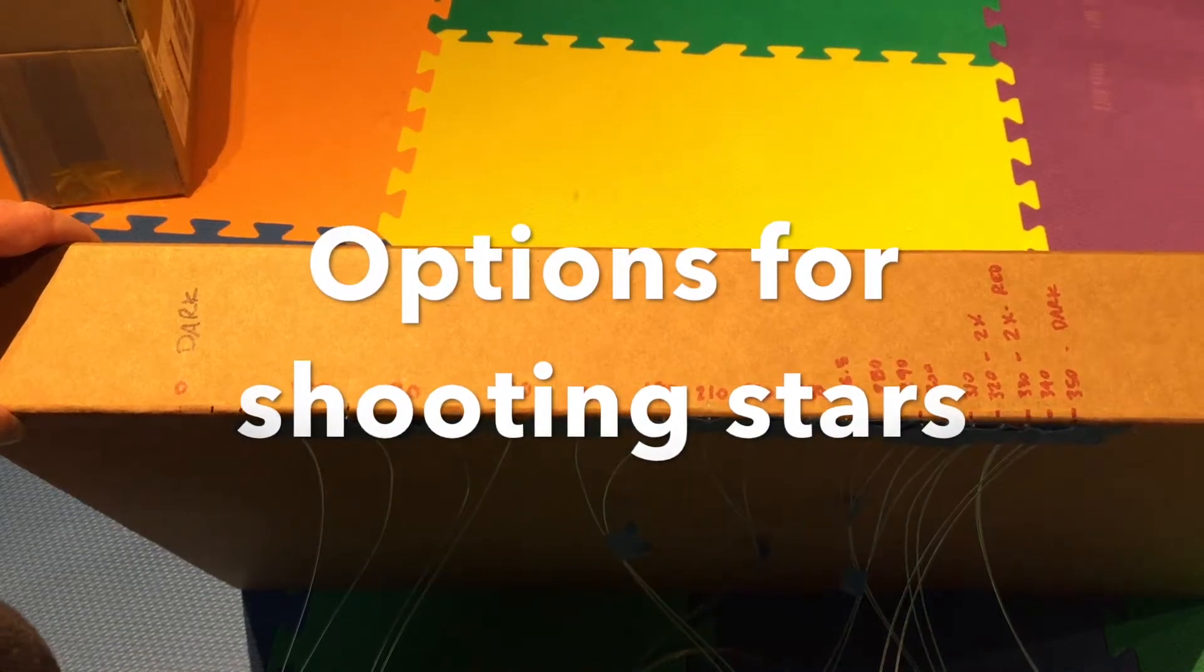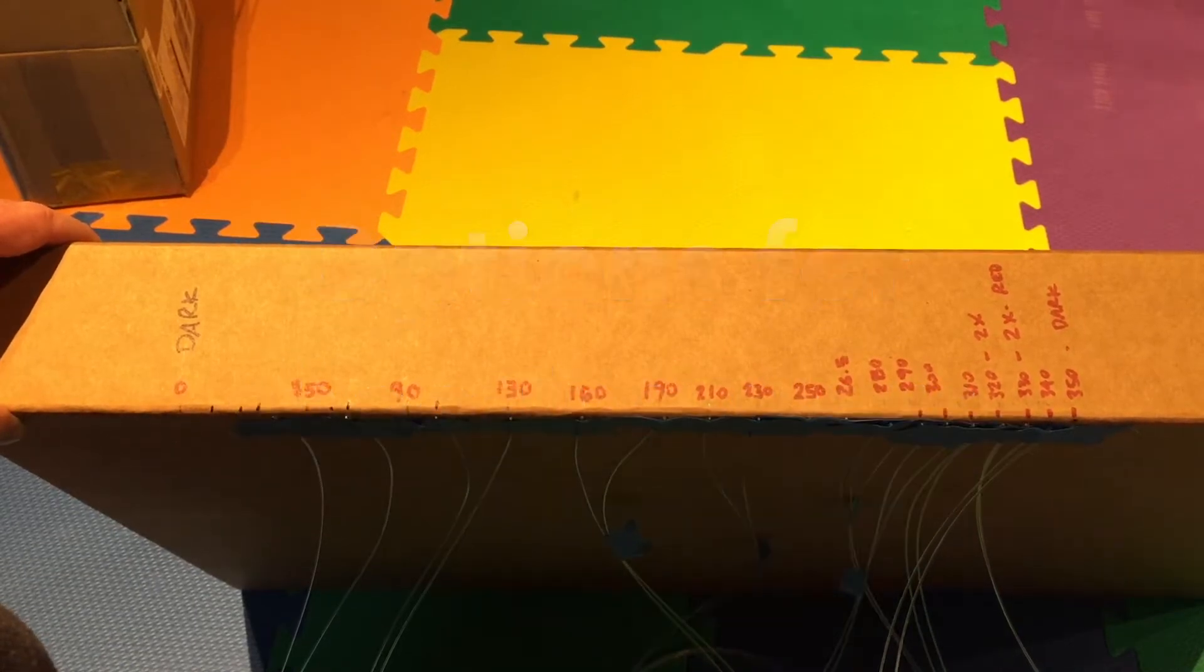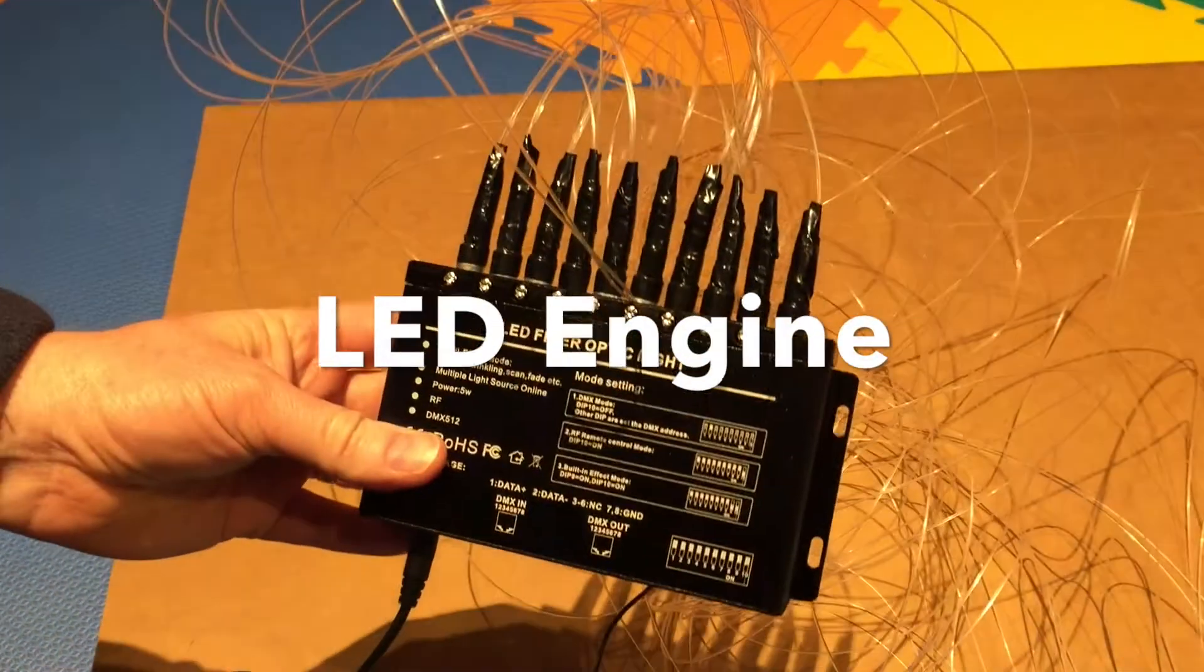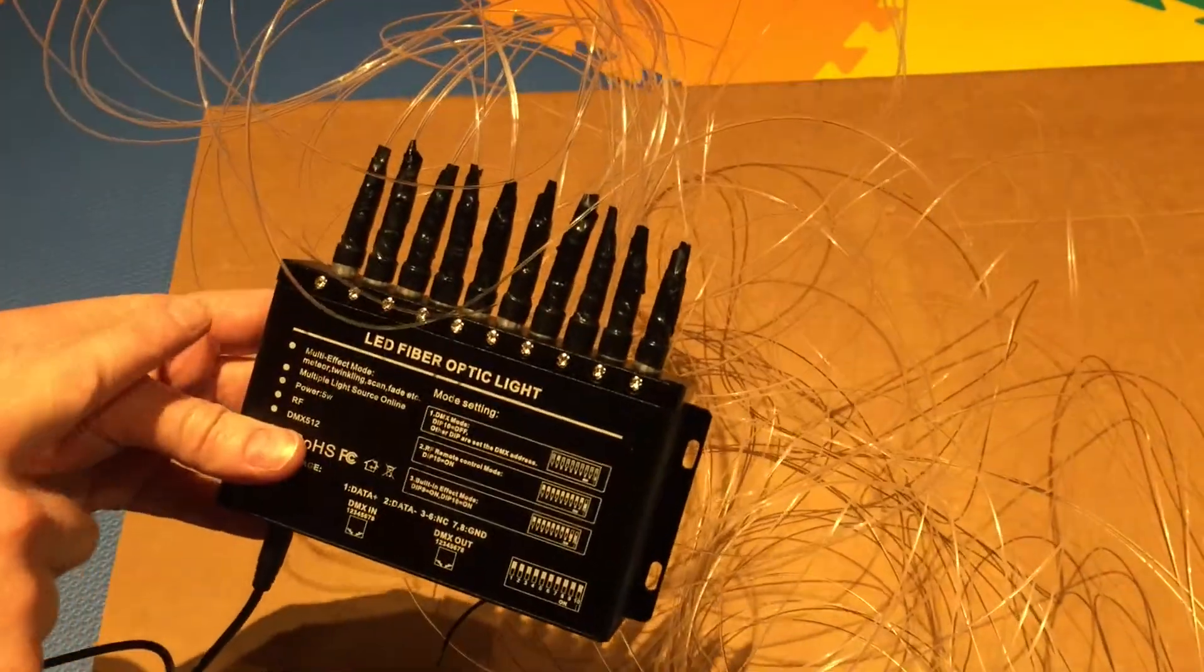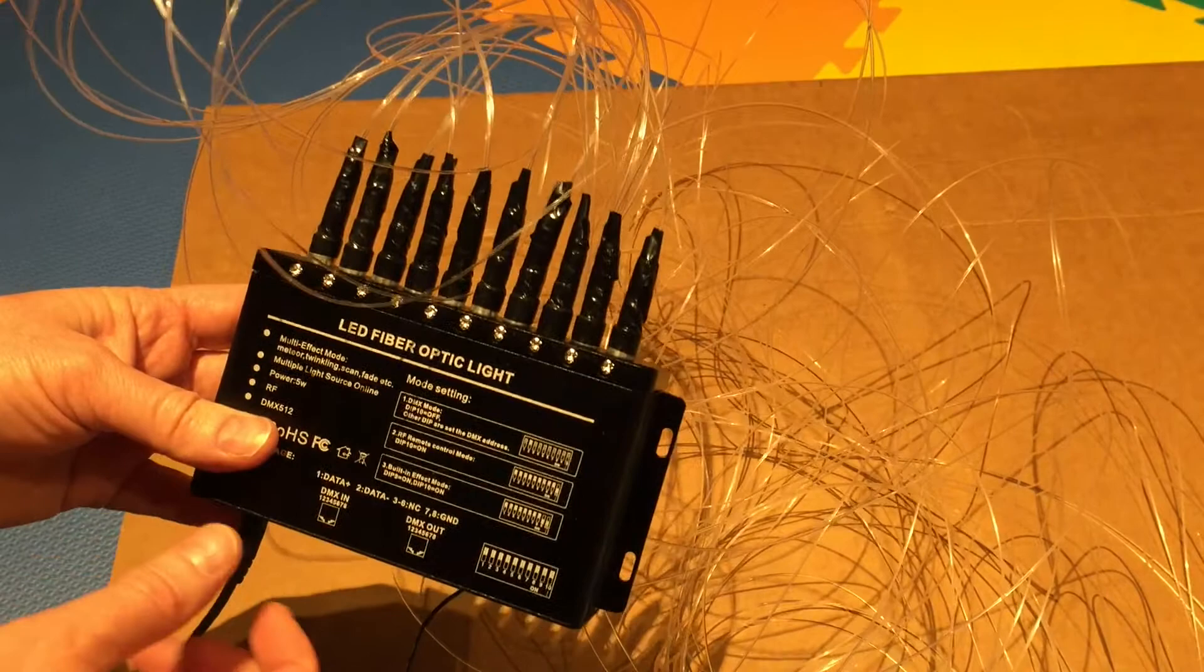In this video we'll look at options for fiber optic shooting stars, but first let's look at the fiber optic engine itself. This is the light engine. There are 10 LEDs that will flash across to do the shooting star.